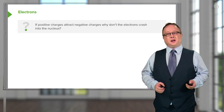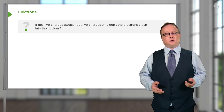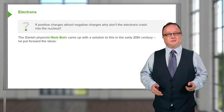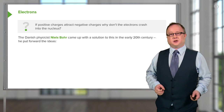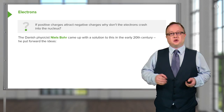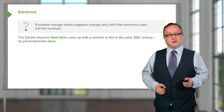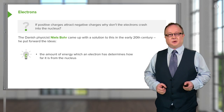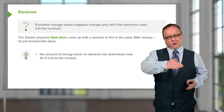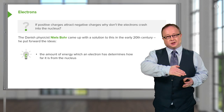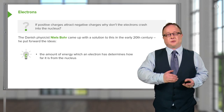This is the basis of quantum mechanics — the understanding that energy exists in small discrete packets. It was the Danish physicist Niels Bohr who came up with a solution to this issue of electrons not actually crashing into the nucleus in the early 20th century. He put forward a couple of ideas. The amount of energy which an electron has determines how far away it is from the nucleus — in other words, the more energy it has, the further away it is from the grasp of the positive charge.